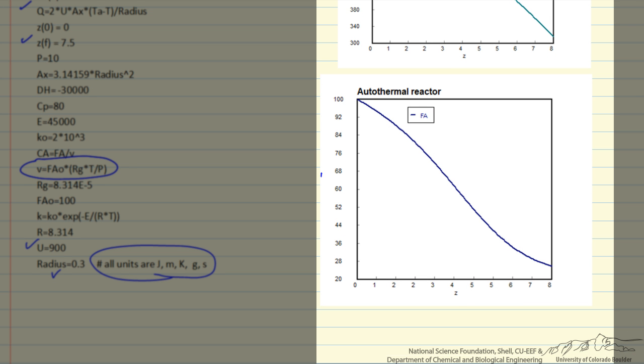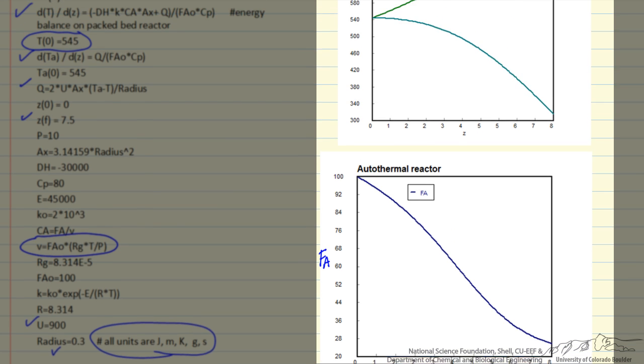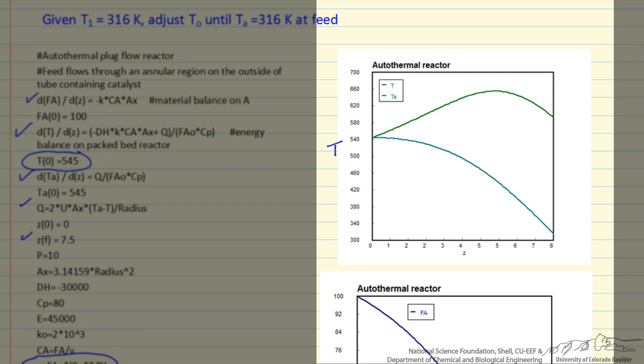So let's look at the flow rate as a function of distance through the packed bed. Of course the flow rate of A decreases as reaction takes place, and it looks like we have about 70% conversion. This is temperature, again as a function of distance. Our inlet temperature, coming at 316, this is 545 Kelvin. So the temperature increases because of the temperature difference between the packed bed and the annular region. And then this is the temperature in the packed bed because the reaction increases until we get to a point where this temperature difference becomes large, and the rate of reaction slows down because the concentration of reactant has decreased. Then now the temperature starts decreasing in the packed bed region.